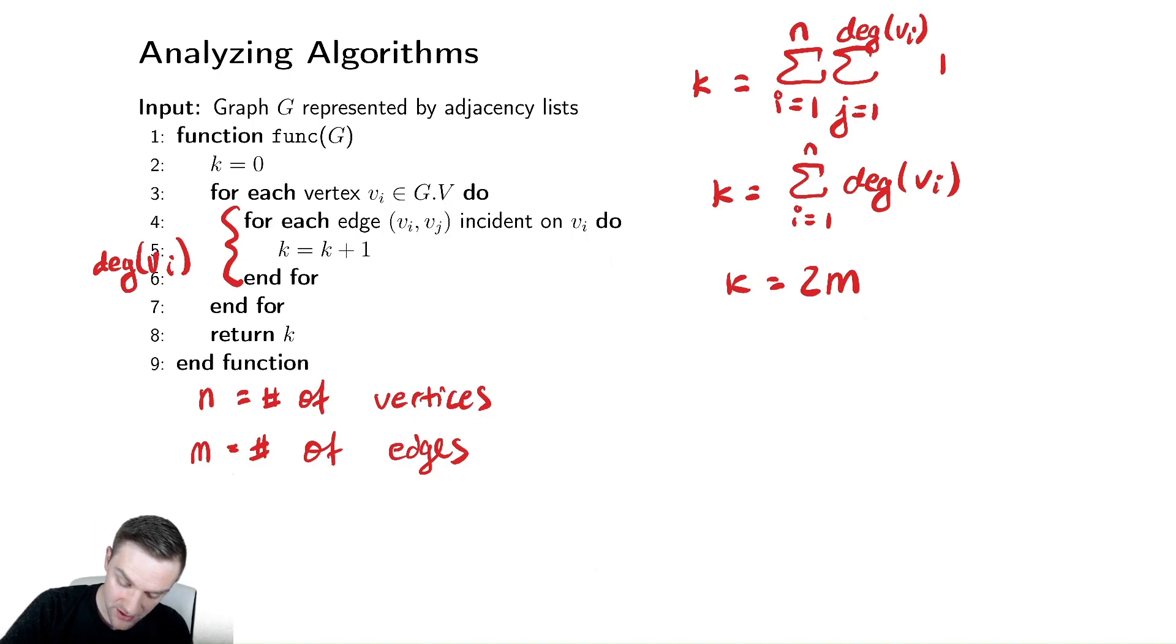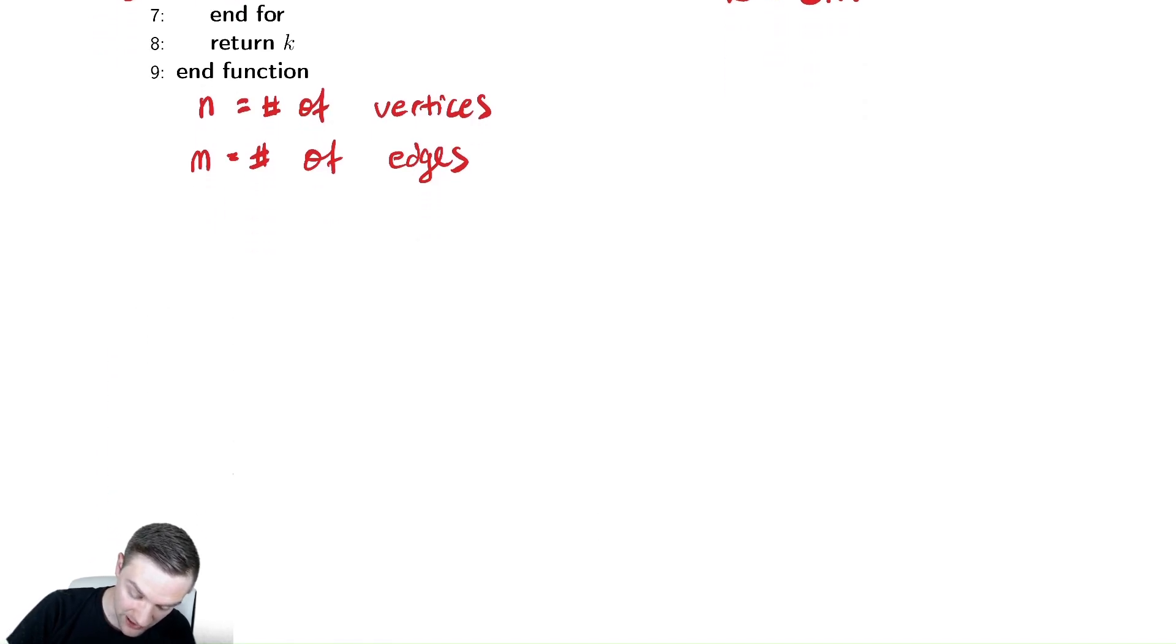So let's suppose that instead of costing 1 like we just said, let's suppose instead that it cost a constant amount of time here. It might be natural to say, well, I could write this as t of n is equal to the sum from i equals 1 to n of the sum from j equals 1 to the degree of vi of c.